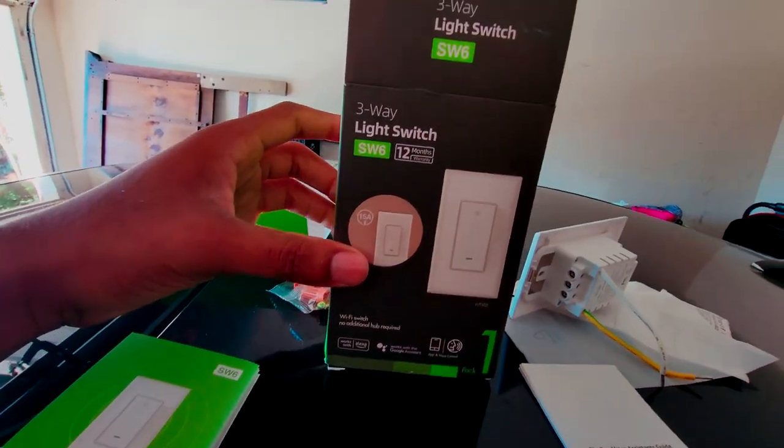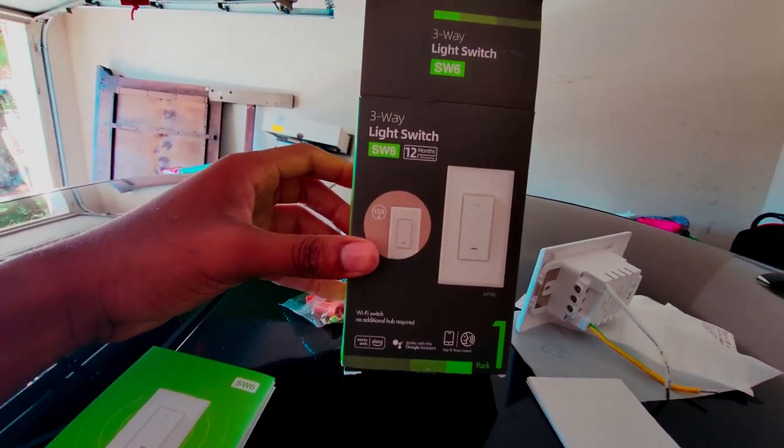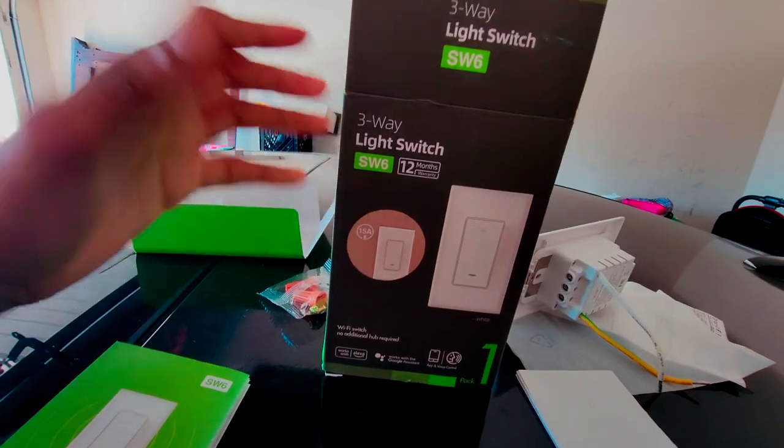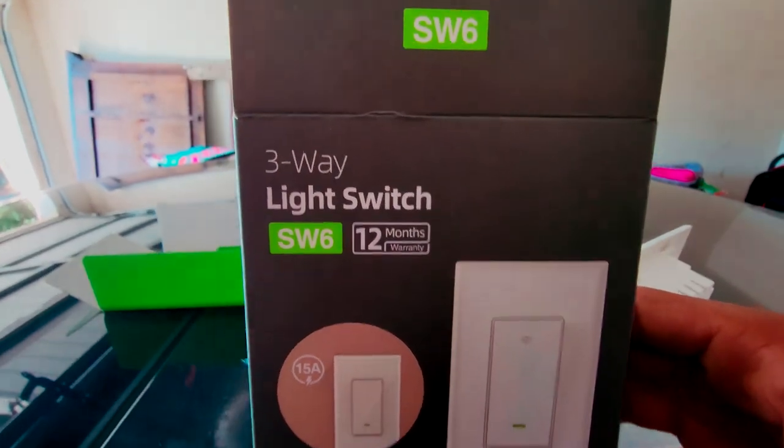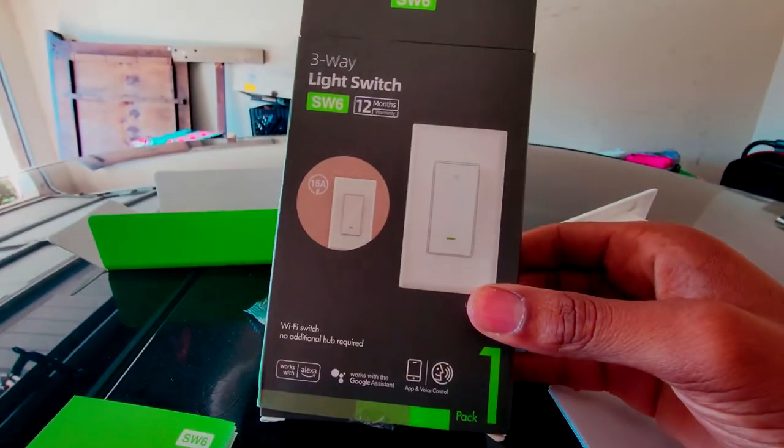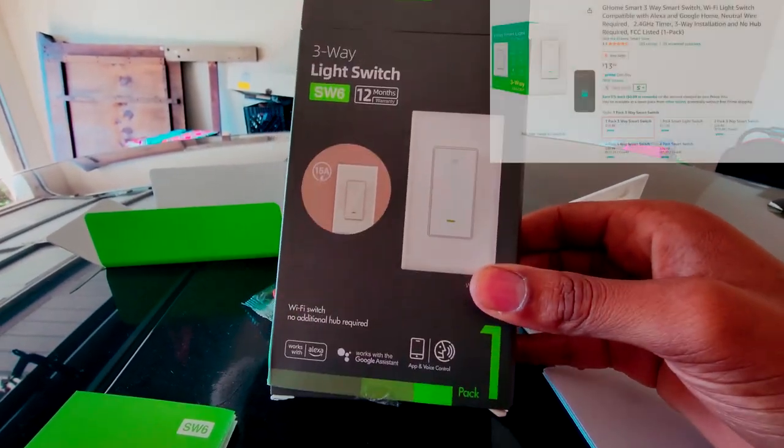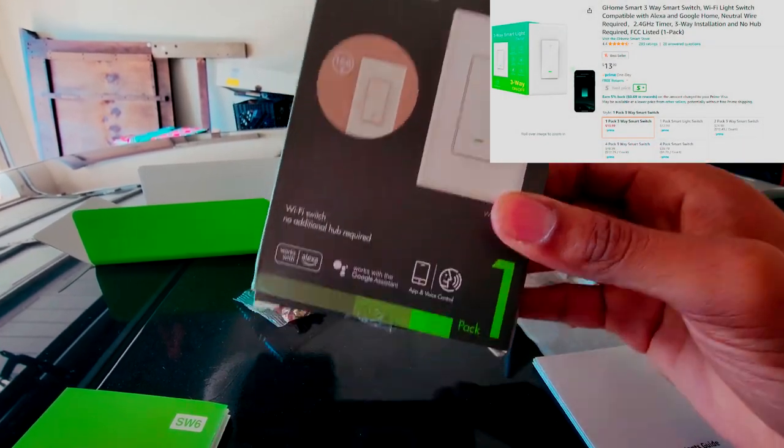Now you can get this off Amazon for a very good price. As you can see, here's your model number SW6, 12-month warranty. This is a Wi-Fi switch, it's going to work with Alexa and your Google Assistant.